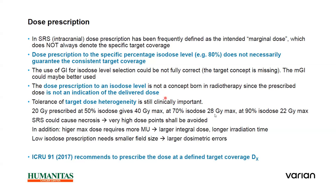Instead of following isodose-based prescription, our trainer in Italy recommended that we follow ICRU-91 and prescribe the dose on target coverage. When prescribing to an isodose line, a higher maximum dose requires more monitor units, larger integral dose, and longer irradiation time — these are drawbacks of isodose prescription. Low isodose prescription also needs smaller field size, and large dosimetric errors could occur.